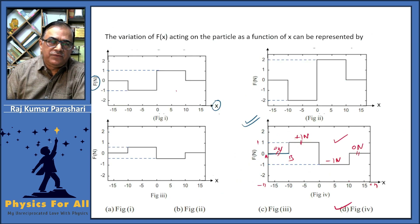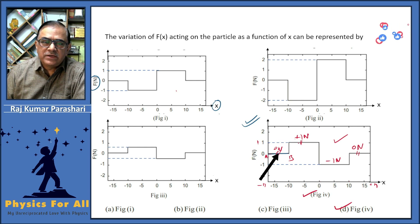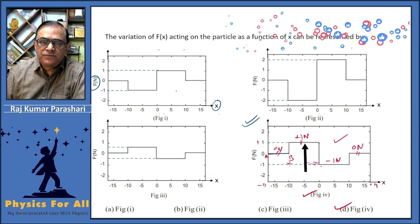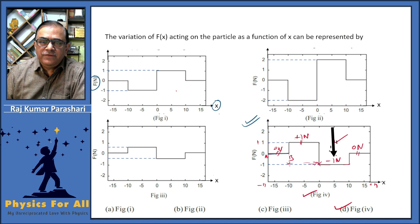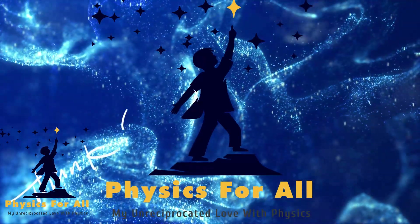The only graph this satisfies is figure B. AB part is zero, BC part ranging from minus 10 to zero is plus one newton, from zero to ten the force is minus one newton, and from ten to seventeen the force is zero. This is the graph that matches nicely.